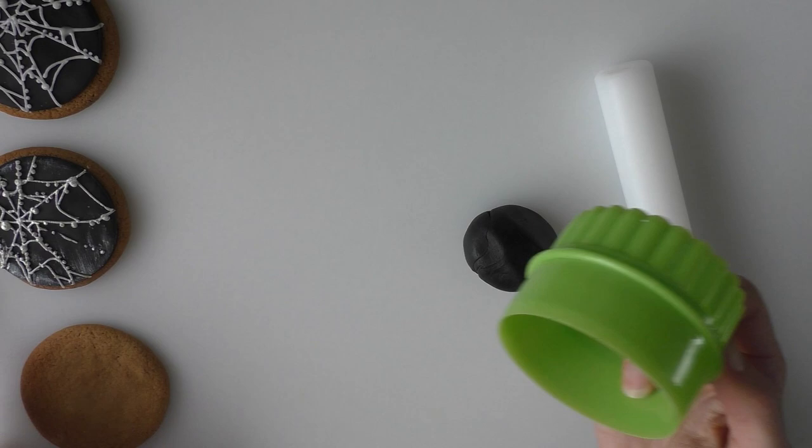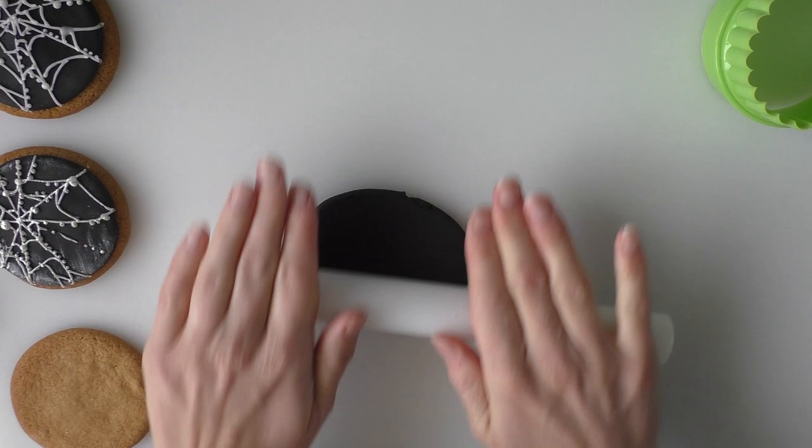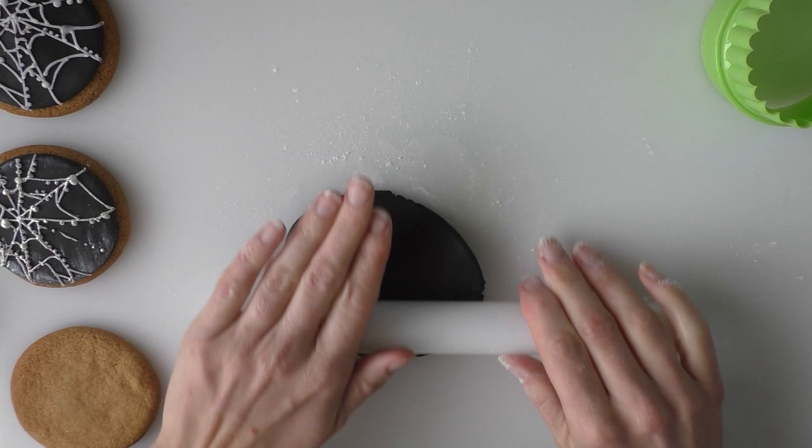So I've just baked some ginger biscuits and cut them out using a round cutter. In the description box below the video I'll put the recipe down for you. I'm just going to put some cotton flour on my work surface to stop the icing sticking.